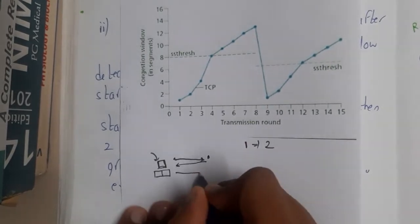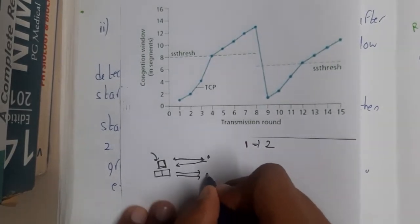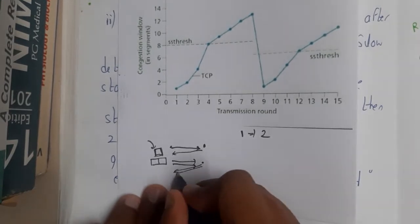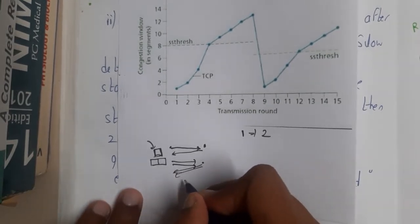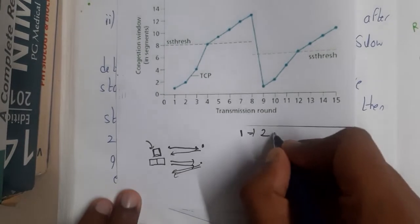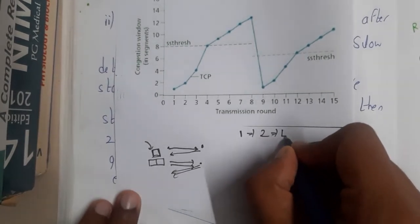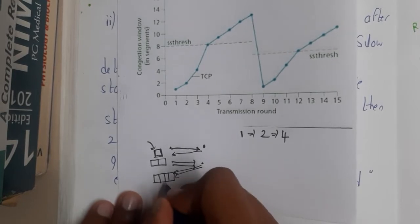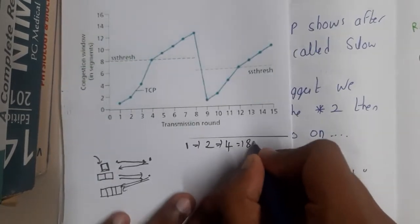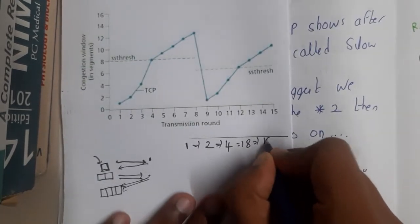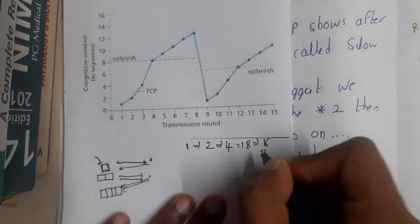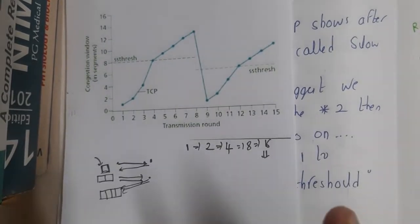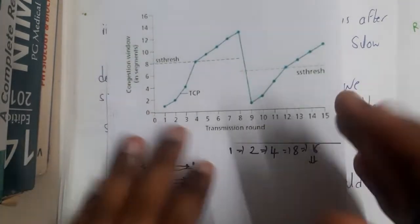Now these two packets go to the receiver. Once they are received, the receiver sends acknowledgement back. The sender again doubles its speed and sends four packets. In this way it keeps on increasing its sending speed. But it cannot increase infinitely — at some point it will reach congestion.